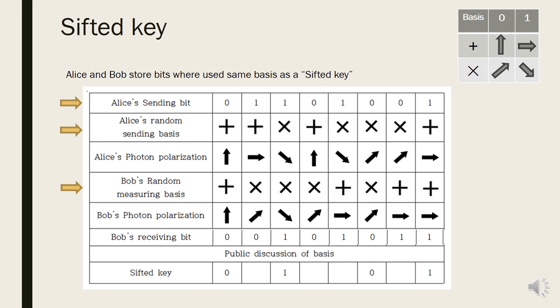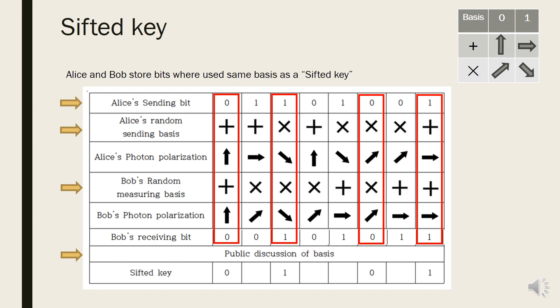In this stage, they broadcast their bases through public channel, and they know what the opposing party used for sending or measuring photon. You can see sending and received bits that used different bases can be same but also can be different. But bits that used the same bases are completely same.